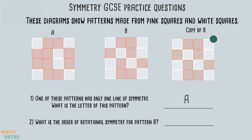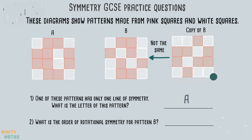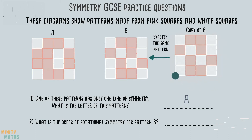Now we have made a copy, we should mark a point in the corner of the pattern, so we know when we have fully rotated it 360 degrees. We can then rotate it clockwise and make a note of each time the pattern of squares looks the same. After a 90 degree rotation the pattern does not look the same as the original. After another 90 degree turn, we can see this pattern looks the same. So far, the order of rotational symmetry is 1.